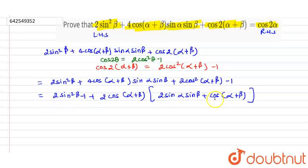This is the formula of cos(A+B), so we will use it. According to the formula, cos(α+β) = cosαcosβ - sinαsinβ.